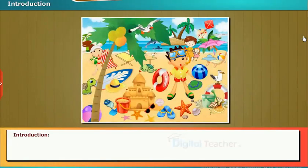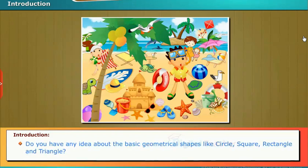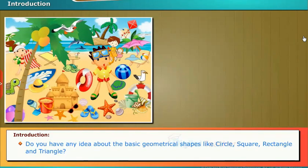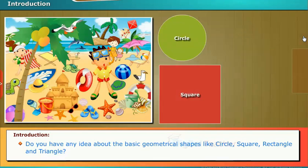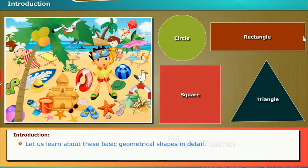Introduction: We observe many objects in our surroundings. We may identify the objects in different shapes. Do you have any idea about the basic geometrical shapes like circle, square, rectangle and triangle? Let us learn about these basic geometrical shapes in detail.